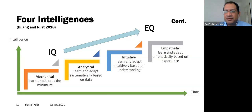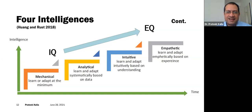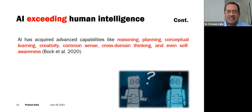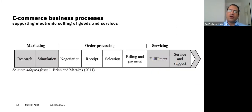I was going through a video where professors and scientists are working on a robotic arm — you can check it on YouTube — that has self-awareness. If that arm has to pick a ball from a table, after continuous repetitions that arm will know where it is and where the ball is. This improves with experience and is all about self-awareness in machines. AI has now acquired advanced capabilities like reasoning, planning, conceptualization, learning, creativity, common sense, cross-domain thinking, and even self-awareness.